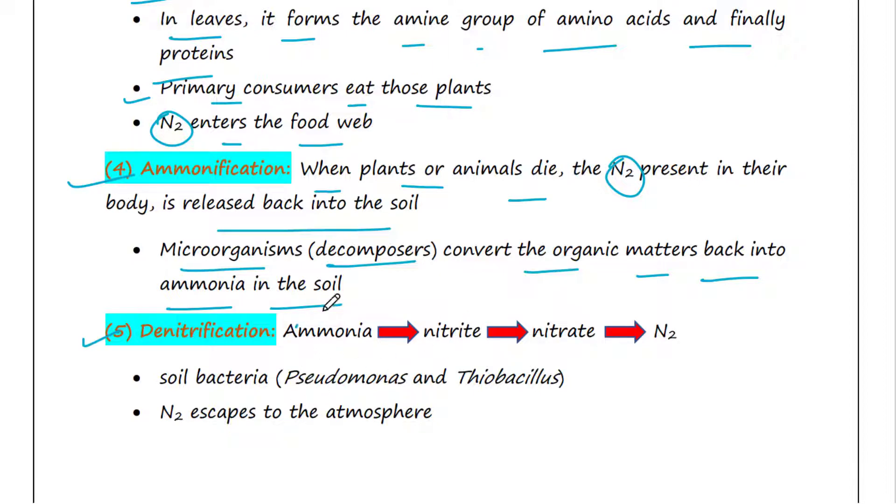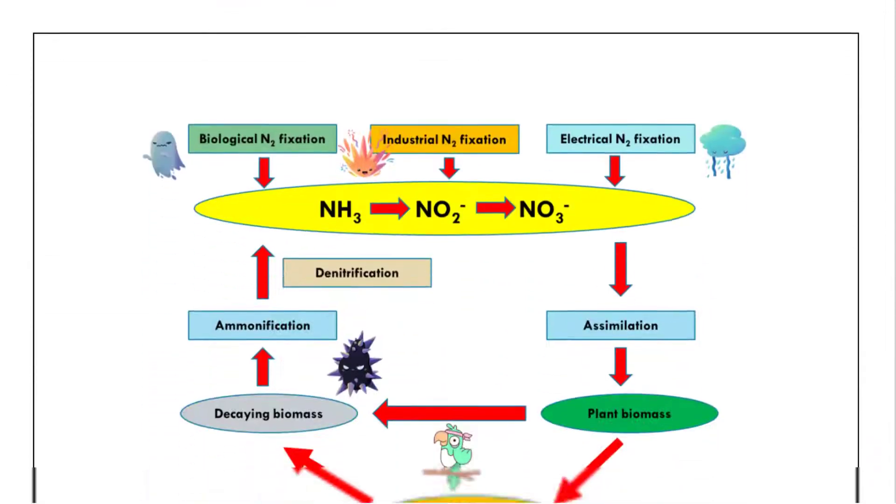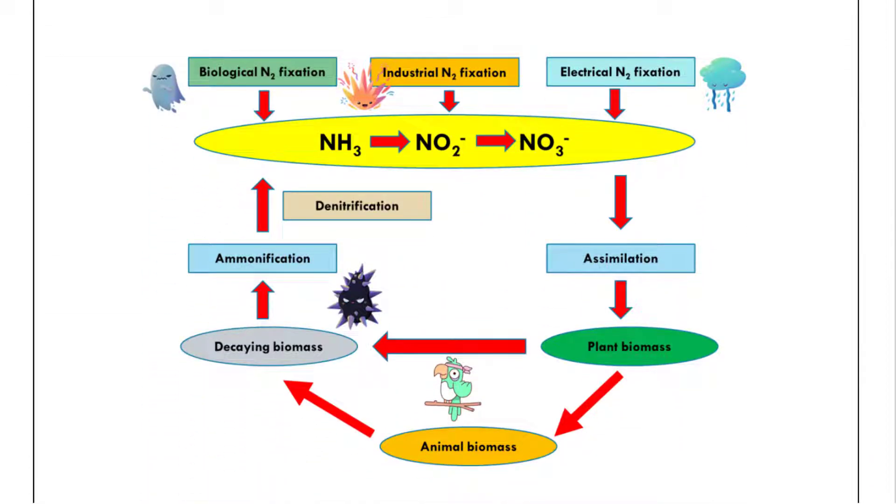The next step is denitrification. Denitrification is the process in which ammonia gas is converted into nitrite, then nitrate, and finally into gaseous nitrogen. This process is carried out by certain soil bacteria such as Pseudomonas and Thiobacillus. Nitrogen then escapes to the atmosphere. In this way, nitrogen gets released to the atmosphere again.